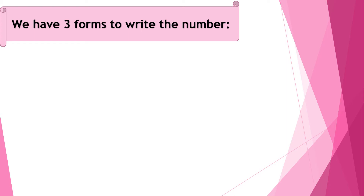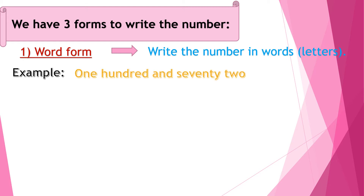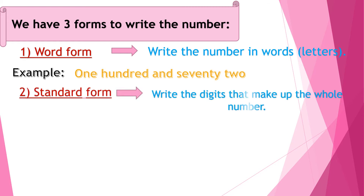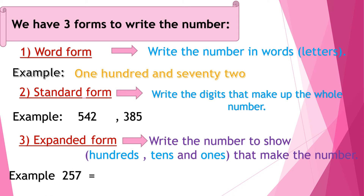We have 3 forms to write a number. Number 1: word form — write the number in words or letters, for example 172. Number 2: standard form — write the digits that make up the whole number, for example 542 or 385. Number 3: expanded form — write the number to show 100s, 10s, and 1s that make the number. For example, 257: we know 2 is 100s, 5 is 10s, 7 is 1s, so expanded form is 200 plus 50 plus 7.